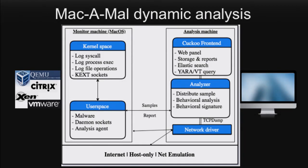In the monitor machine on the left side, malware runs in user space. An analysis agent receives samples from the analysis machine and communicates with kernel space, where we implement our kernel space monitor. It can monitor system calls, process execution, file operations, and network activities. Cuckoo supports many virtualization managers, and we successfully created virtualized Mac instances on VMware, VirtualBox, and QEMU. The analysis machine can run any OS, but the virtualized machine must run macOS. Any sample type is supported as long as the relevant software is available on the monitor machine.